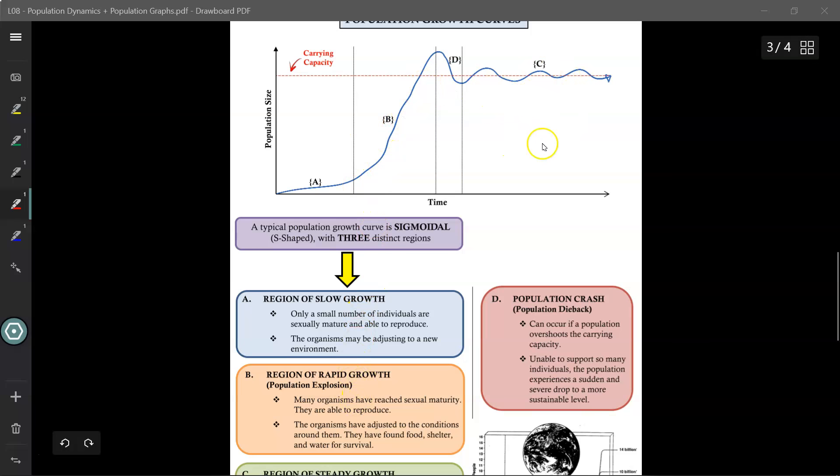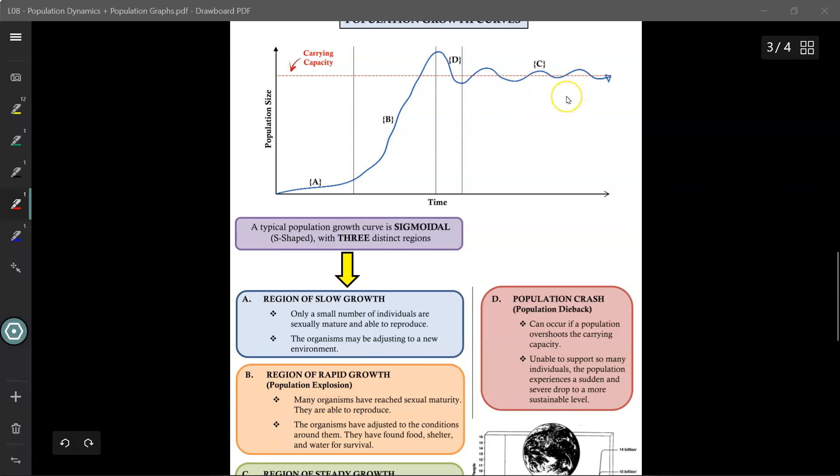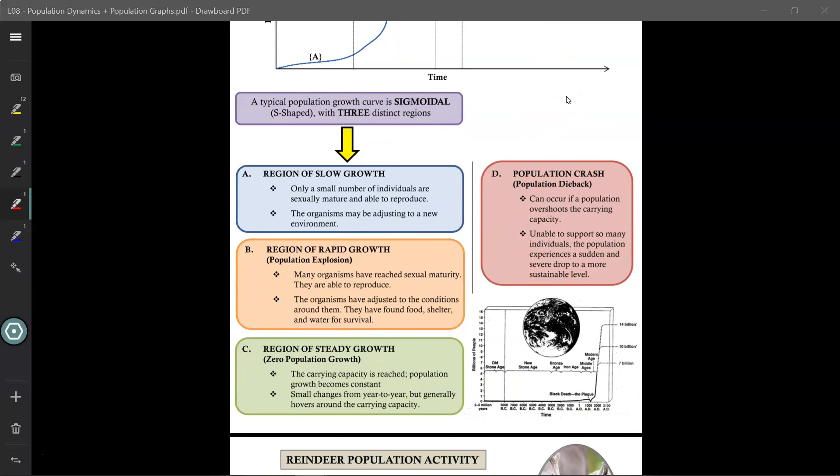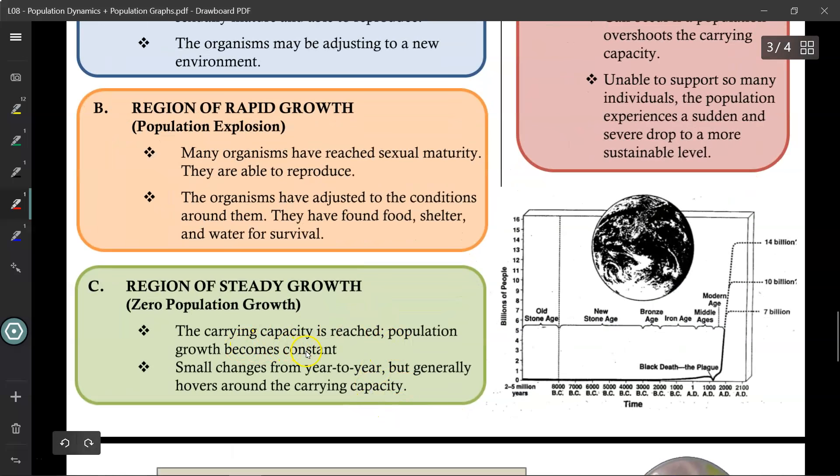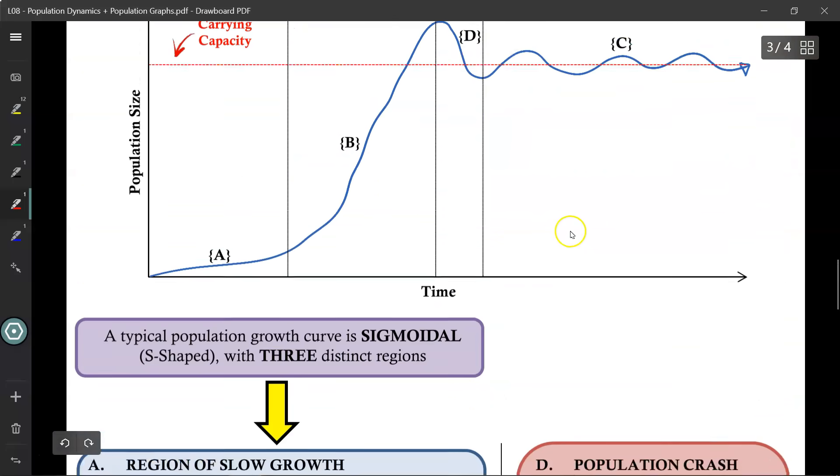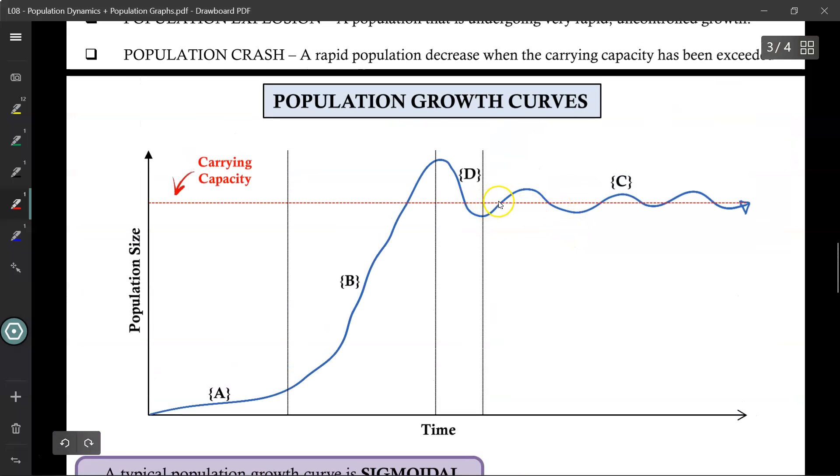Now the final region over here is known as the region of steady growth. In this part of the graph, the carrying capacity has been reached, the population growth becomes constant. So the environment can no longer support a higher population. However, there will be some small changes from year to year that generally hovers in and around the carrying capacity. So maybe one year you have a lot of food, but the next year very little food. The next year maybe a lot more food, but it generally hovers in and around the carrying capacity for that particular environment. And that accounts for the small fluctuations in the population.